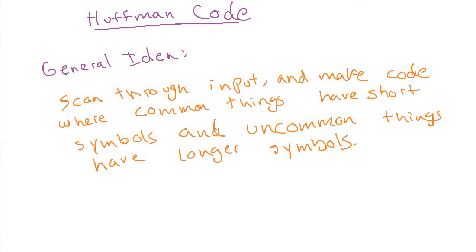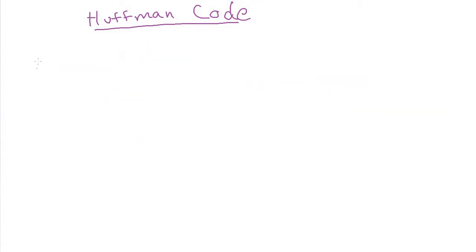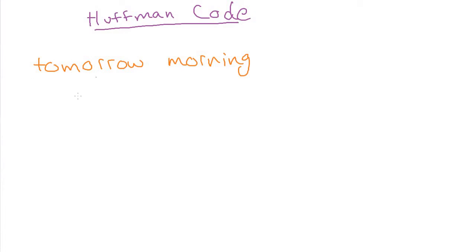Because the Huffman code generates a prefix code, we don't need to store any separators — we can run all the symbols together and it won't be ambiguous about where one starts and ends. So that's the general idea. Let's take a look at how this works with a simple example: let's compress the text 'tomorrow morning.' I picked this phrase because it has some repeat letters — three O's, three R's, a couple N's and a couple M's.